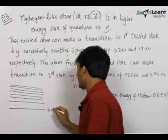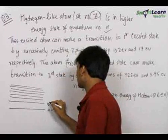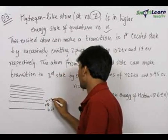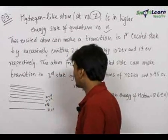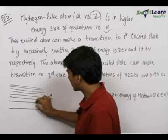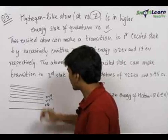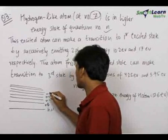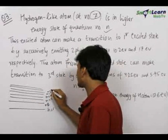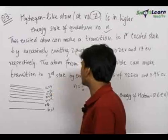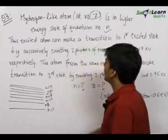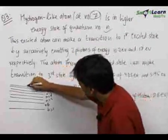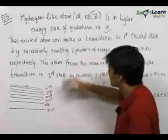This is n=1, 2, 3, 4 — note that the gaps keep reducing subsequently. n=5, n=6, and this is n=n, let it be in some excited state n initially.